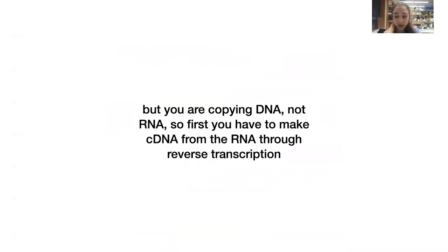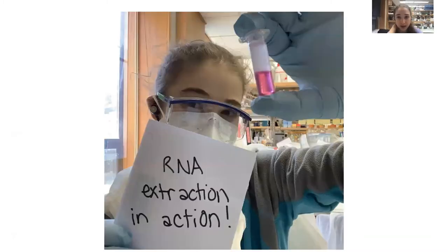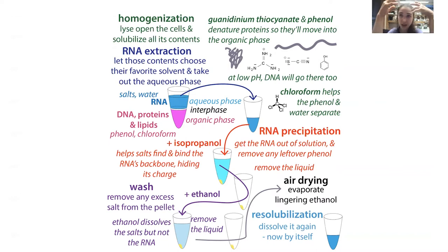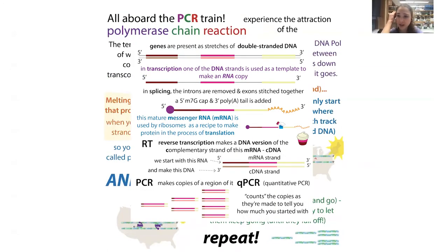First we need to isolate the RNA. This is often done with Trizol or a phenol-chloroform extraction, where you selectively precipitate RNA by manipulating the solution chemistry and washing everything else away. Column-based methods also exist. The key is that you get the RNA, and then you make DNA copies of it — the cDNA — which is what you'll use in the PCR step.